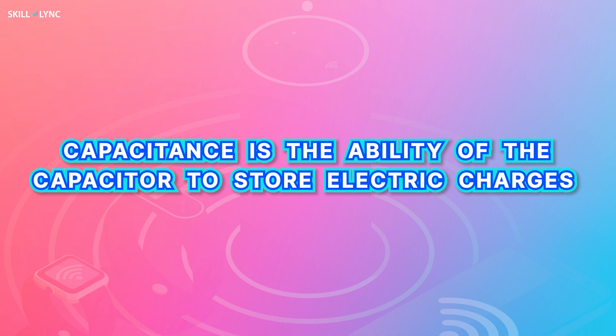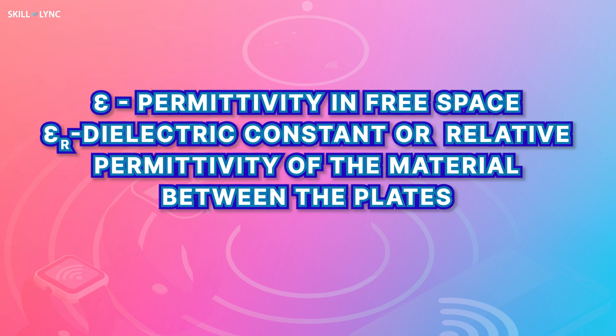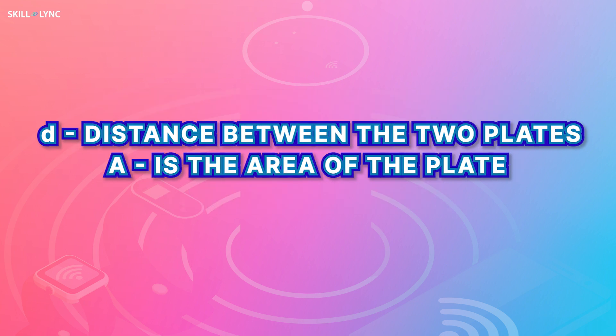When a voltage is applied across the capacitance sensor, charges get stored. Capacitance is the ability of the capacitor to store electric charges. The formula for capacitance is given by C equals epsilon multiplied by epsilon-r, multiplied by A, all divided by d. Here, epsilon is the permittivity in free space — it represents the ability of the vacuum to permit electric fields. Epsilon-r is the dielectric constant of the material between the plates.